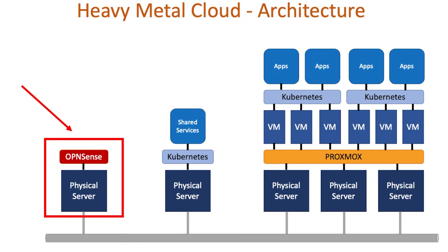Let's start building out my little cloud. The first server I'll set up is called OpenSense. Normally OpenSense is used as a firewall, but for my cloud I'm going to take a different approach and use it for DNS.